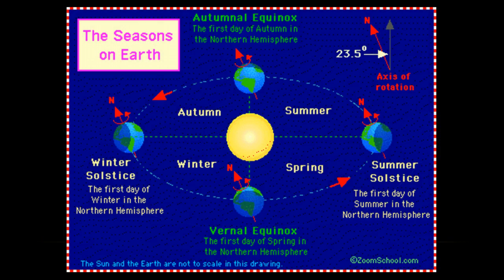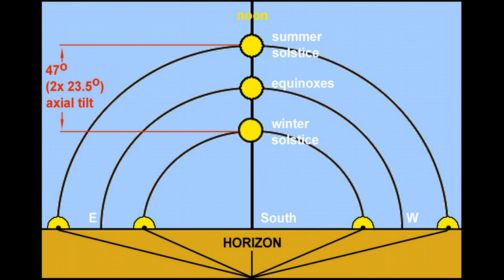That's the very short version of how the ancient appointed times work. Now let's look at 2015. The texts tell us to observe the turn in the spring and the fall. The turn is the turning of the season — the turning of the earth around the sun from either winter to spring or summer to fall.